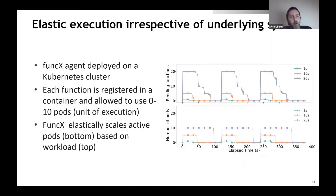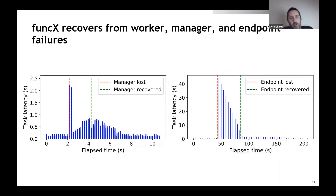There are a few advantages of this system. One is the elasticity well-known in the function-as-a-service model — we're dynamically provisioning resources on demand based on workload. This plot shows a workload where tasks are sent in at various points in time, and the system scales to address those requirements. Another advantage is fault tolerance and resilience. Everything in the system is architected to queue tasks with the aim of not losing them. If a worker node dies, tasks are queued at the endpoint. If the endpoint dies, tasks are queued at the cloud. You can turn off your HPC machine or laptop running a FuncX endpoint, and when you open it back up, the compute tasks will continue to run.